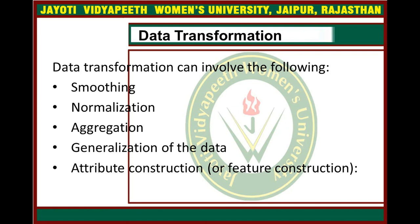Smoothing works to remove noise from data. These strategies include binning, regression, and clustering, which have been described in previous videos. Normalization scales data to be evaluated within a particular range, such as 0 to 1.0, for better performance.